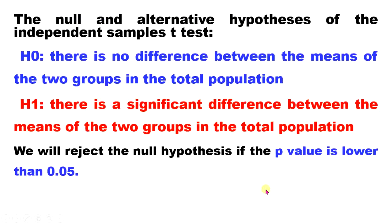The null hypothesis states there is no difference between the means of the two groups in the population. The alternative hypothesis states there is a significant difference between the means of two groups in the total population. We will reject the null hypothesis if the p-value is less than 0.05.